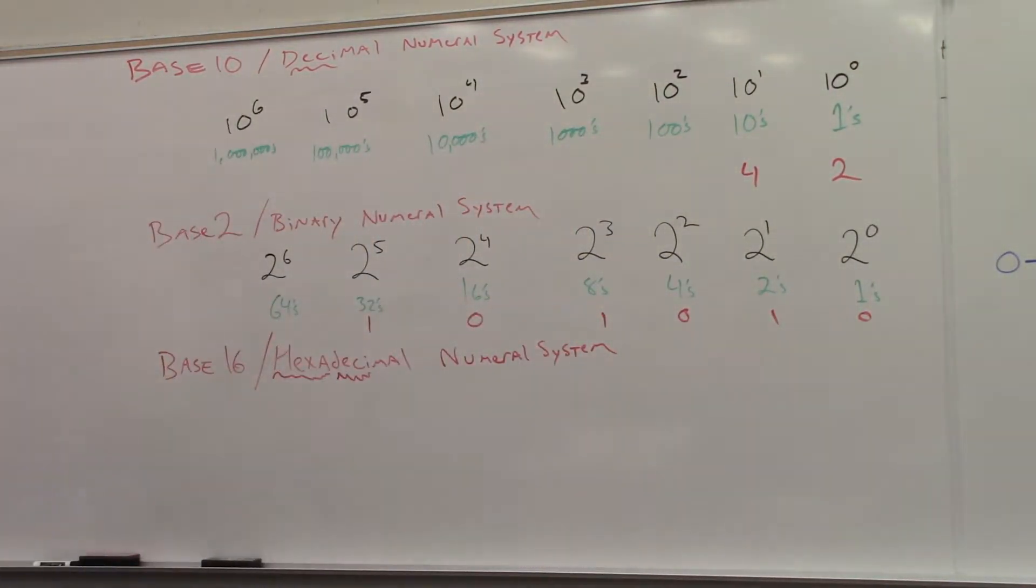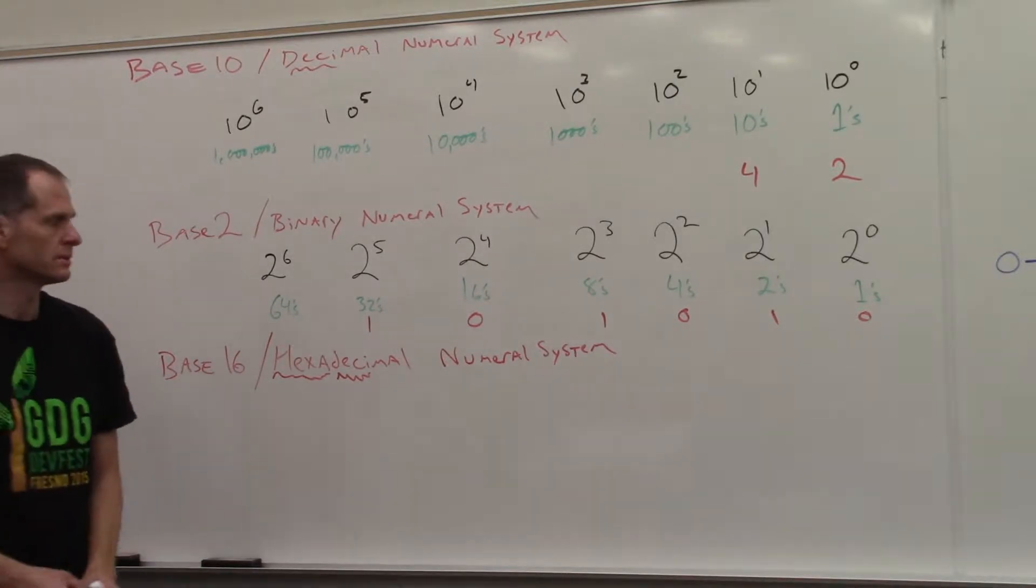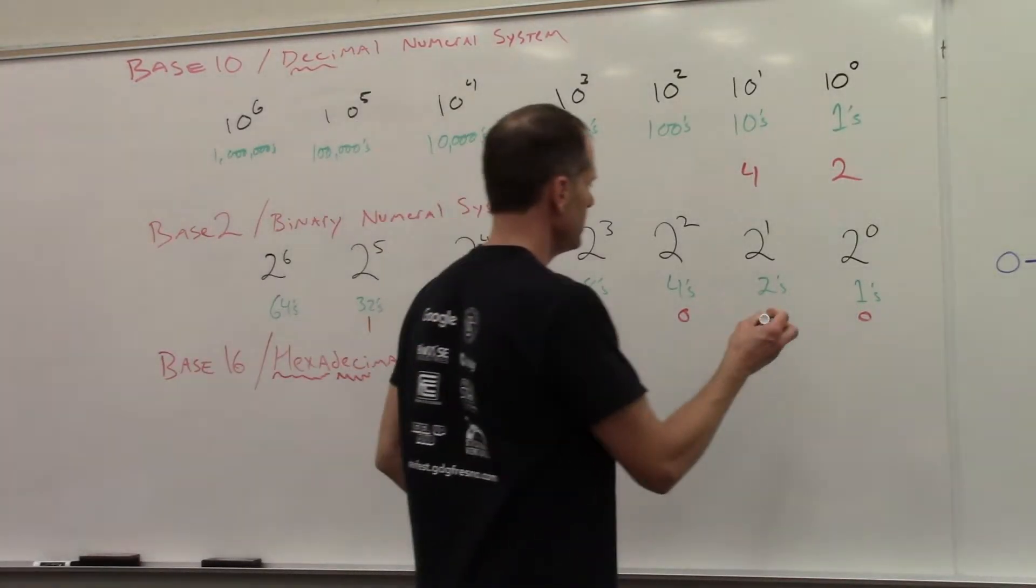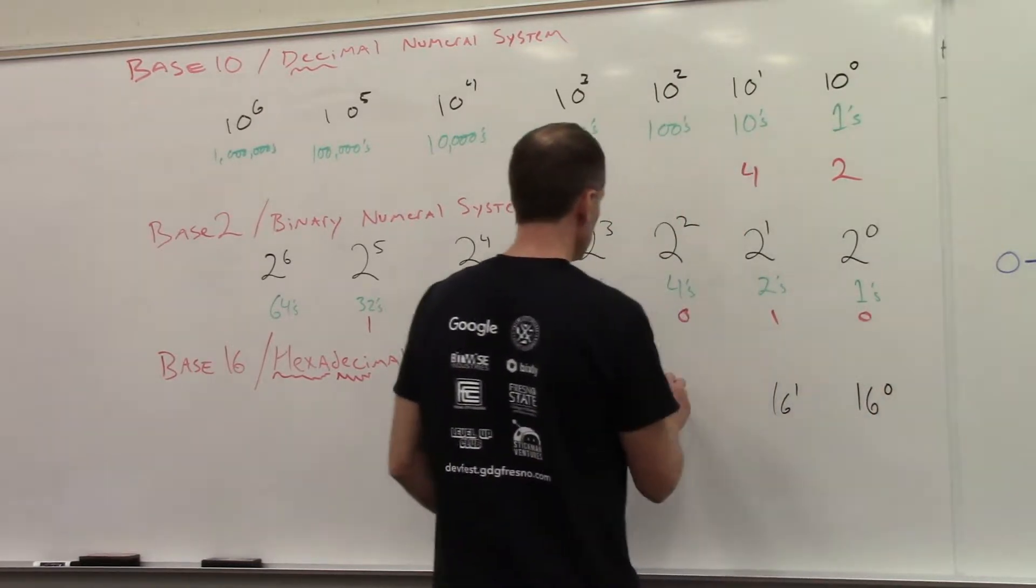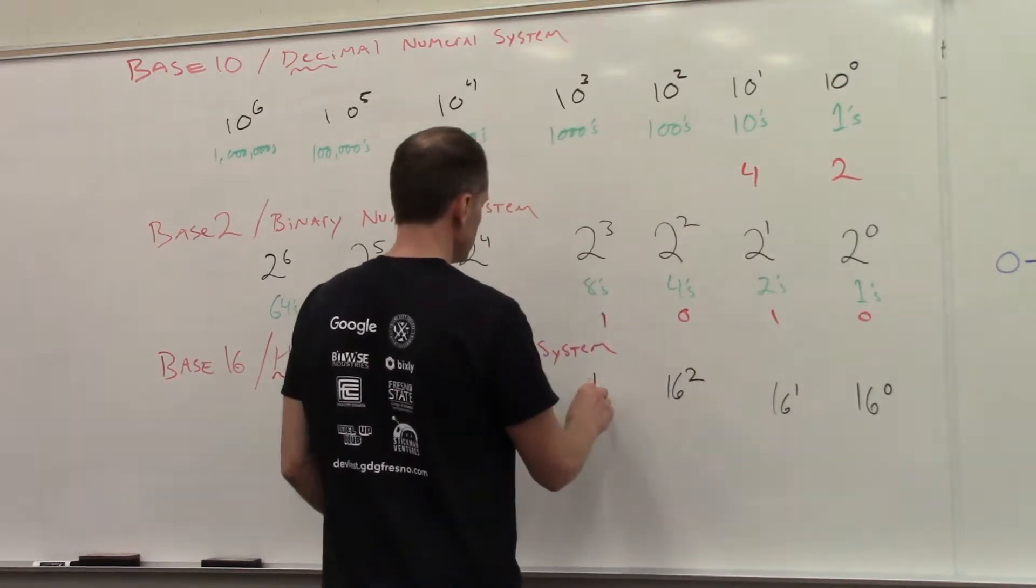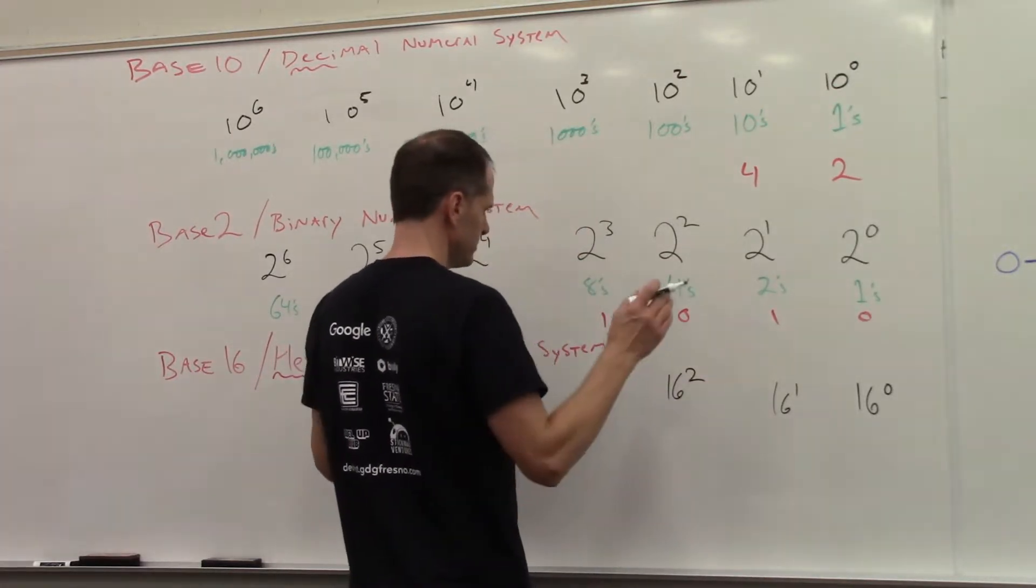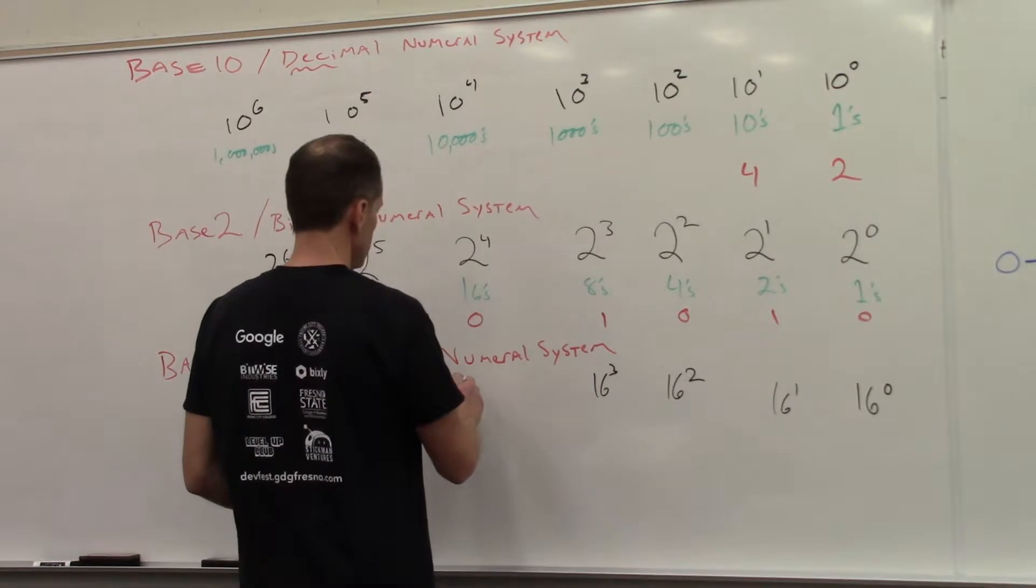So hexadecimal, just like these, base 10, base 2, we do base 16. 16 to the 0, 16 to the 1, 16 to the 2, 16 to the 3, 16 to the 4.